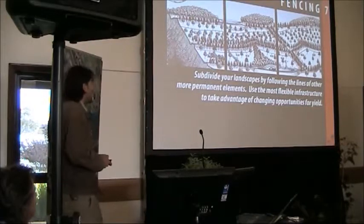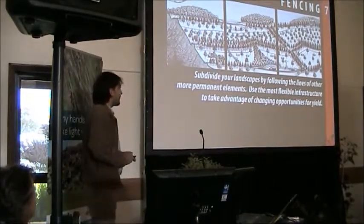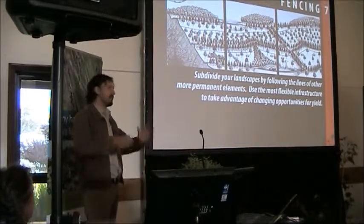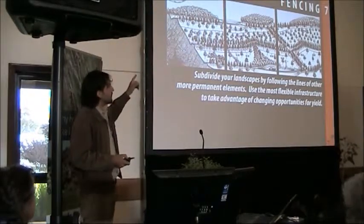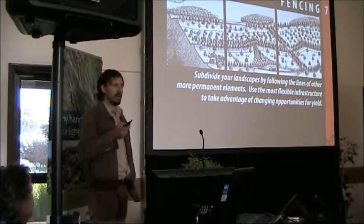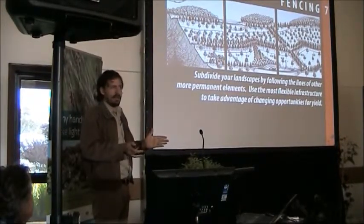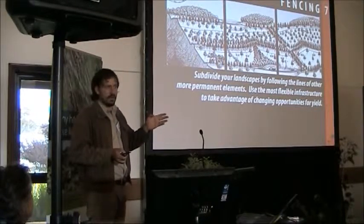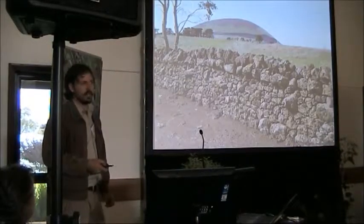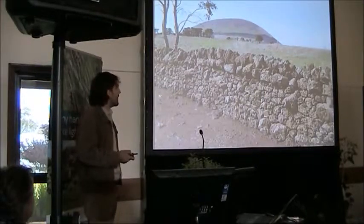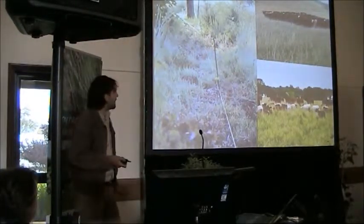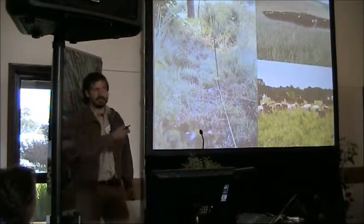Stop dividing your landscape by following arbitrary lines; instead use the most flexible infrastructure to take advantage of changing opportunities for yields. Instead of arbitrary land divisions from when the land was divided up, use ridges and valley lines as the primary land units to inform your design decisions about what will create your paddock. Once upon a time it took generations to create fencing; now we've got single-strand electric wire at 90 cents a metre that can hold back a whole herd.